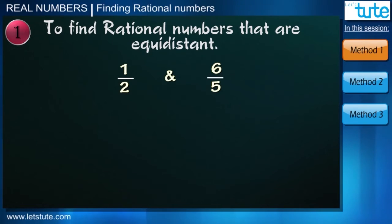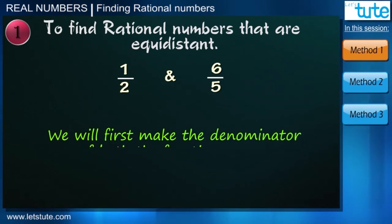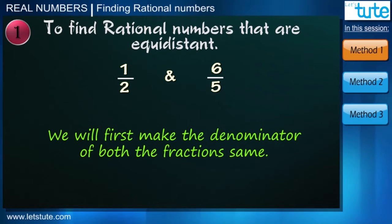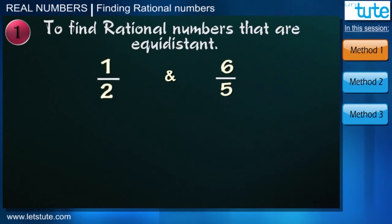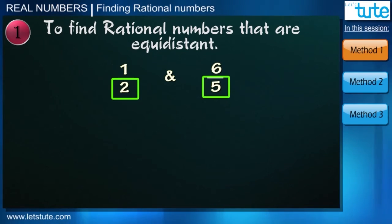Suppose the two fractions are 1 upon 2 and 6 by 5. Now, if we notice in the trick we were actually making denominators of both the fractions same. So to find the rational numbers between these two fractions, we should make the denominator of both the fractions same, right? So can you tell me a way?